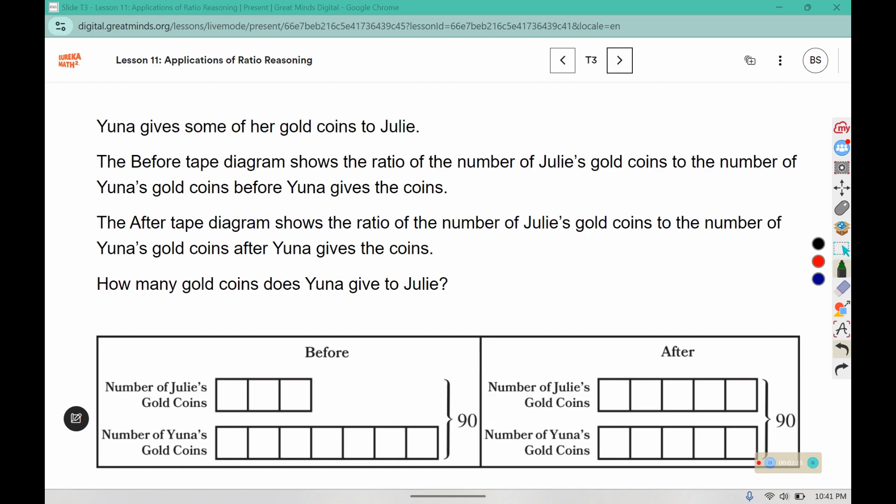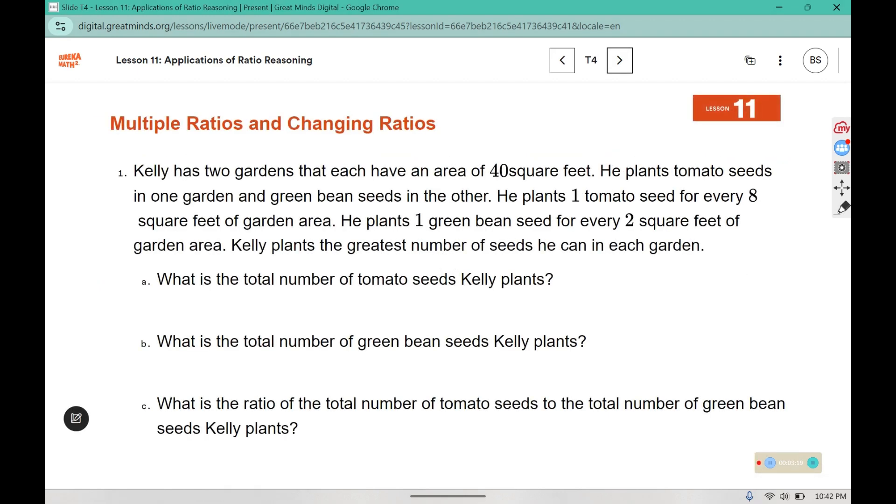So we have 90 split amongst one, two, three, four, five, six, seven, eight, nine, ten boxes. If we split 90 into 10 parts, remember they are equal sized boxes, that means nine goes in each one. And since the number of coins before and after is 90 in both cases, nine also goes in each box in the after section. So before, nine times three is 27, and over here nine times five is 45. We also discussed how there were two extra boxes. So we can say that Yuna gave Julie 18 coins. We can subtract 45 and 27 and get 18.